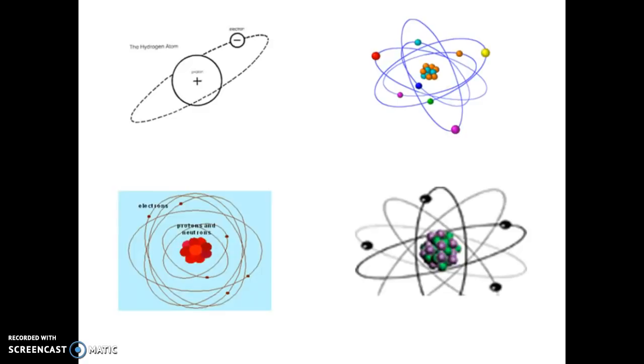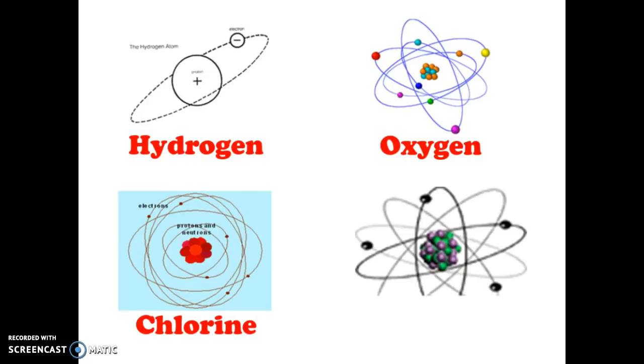And on the right hand side you have a couple pictures. That first one there is my hydrogen atom, that hydrogen atom has one proton and one electron. To the right of hydrogen, if you count all of those electrons circling around in those energy levels we have oxygen. Below hydrogen, if you count those in the outer energy level we have chlorine, and to the right of chlorine we have a fluorine atom.